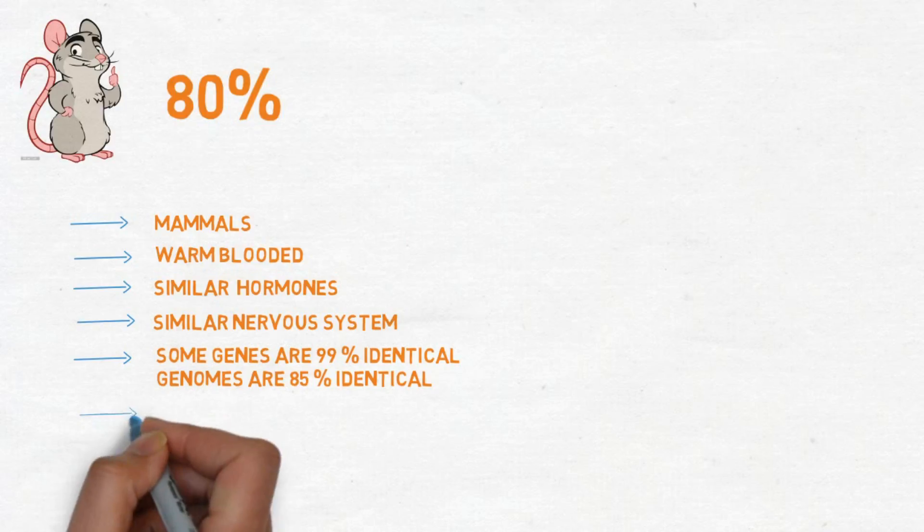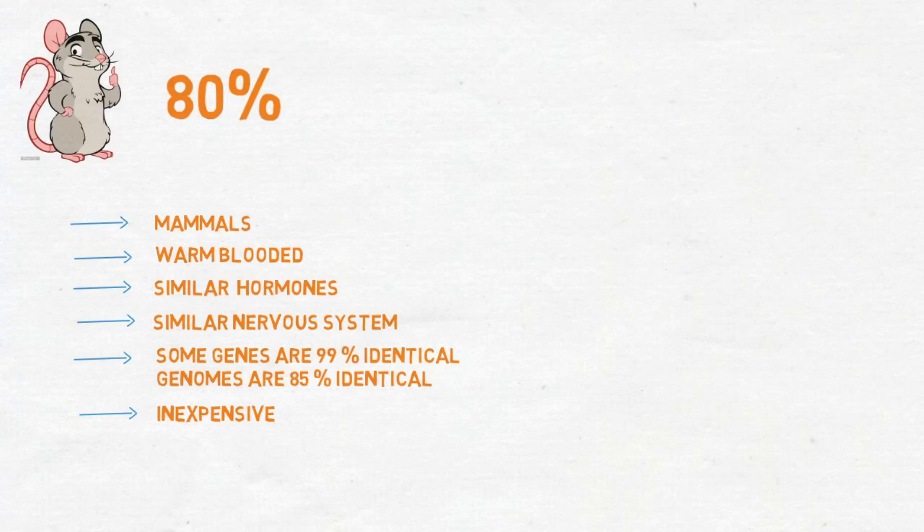Mice and rats are relatively inexpensive and can be bought in large quantities from commercial producers that breed rodents specifically for research. The rodents are also generally mild-tempered and docile, making them easy for researchers to handle, although some types of mice and rats can be more difficult to restrain than others.